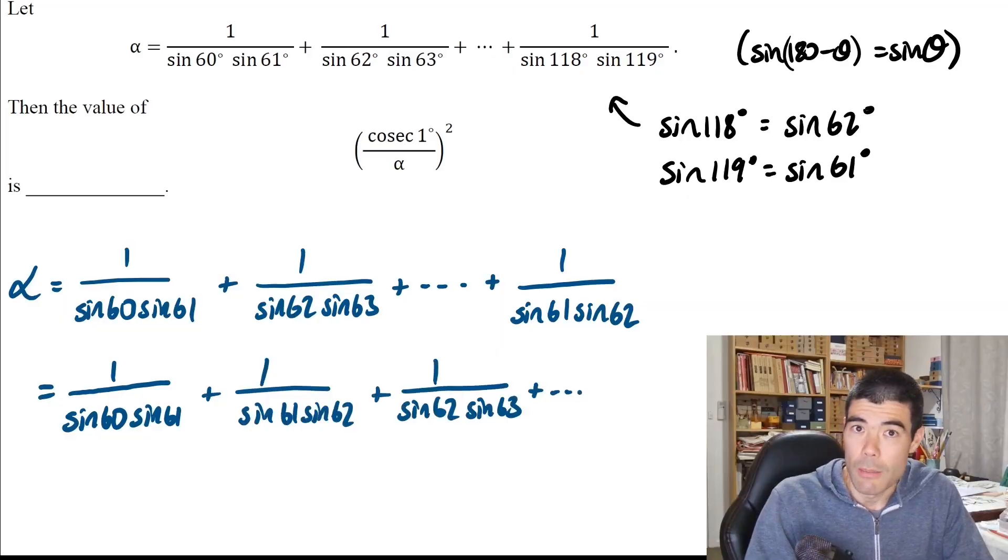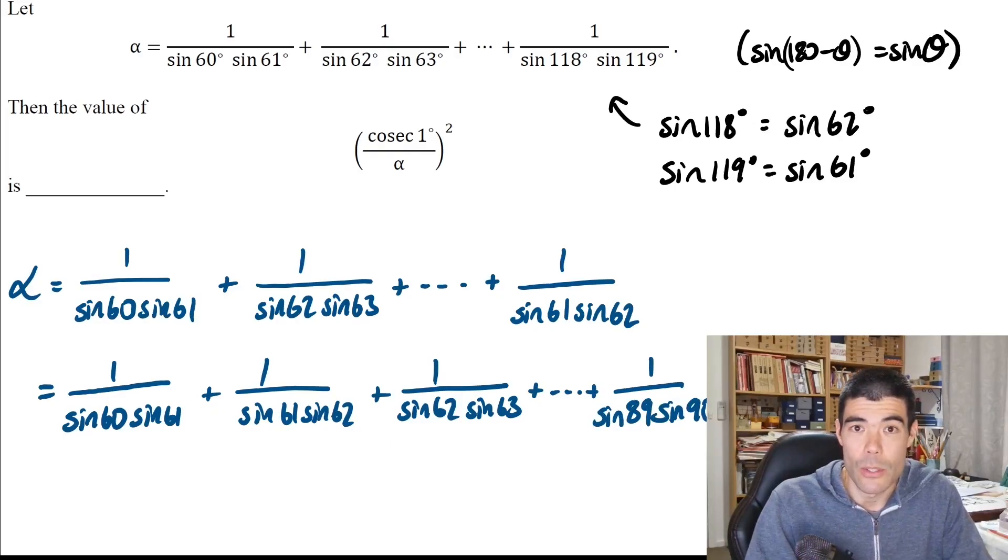We can do a similar thing for all the terms in the second half of our sequence. With our new sequence, it's going to end in the middle of the original sequence. The middle would have been halfway between 60 and 118, so it's going to be sine 89 sine 90. That will be the final term in our new sequence.